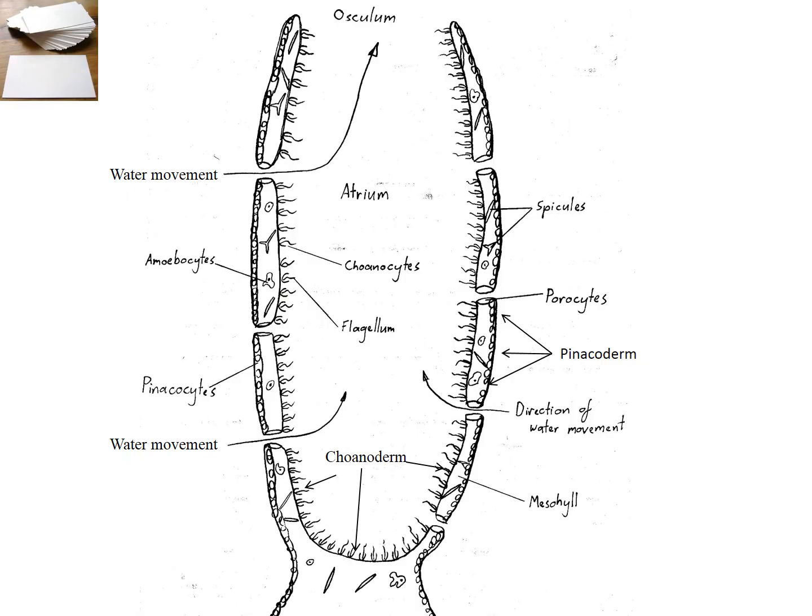So for each of the phyla, I am going to give you a diagram that is essentially the basic body plan of that particular organism, or that particular phyla. And most of the organisms within that phyla will have only some variations of that basic body plan. And this is the one for sponges. So we'll start with water movement.